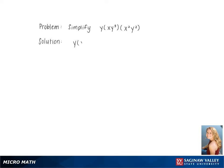To simplify the problem y times xy cubed times x squared y squared, we first use the formula below and add the exponents of each variable, giving us x to the 1 plus 2 and y to the 3 plus 2 plus 1.